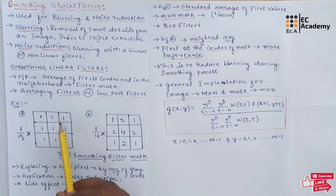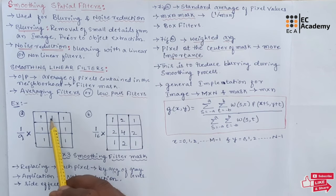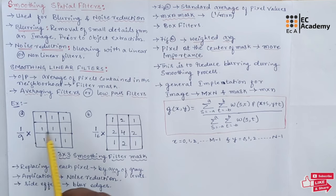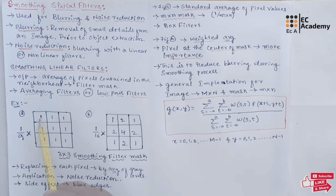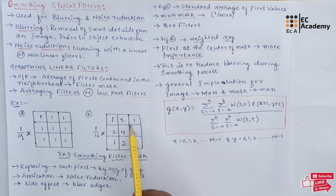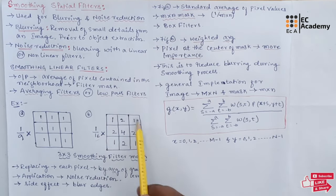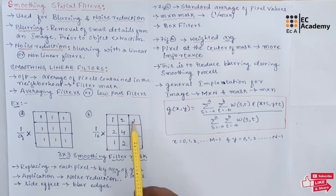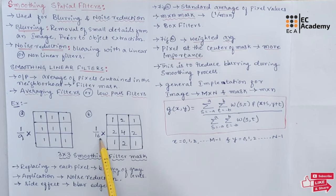Hence, to normalize or to get an average value, we will divide each coefficient by 9. So 1 by 9 multiplied with all these values is nothing but similar to dividing all these coefficients by 9. In figure b, if we add all the coefficient values, we will get 16. Hence, to normalize or to get the average value, we will divide each coefficients in this filter mask by 16.